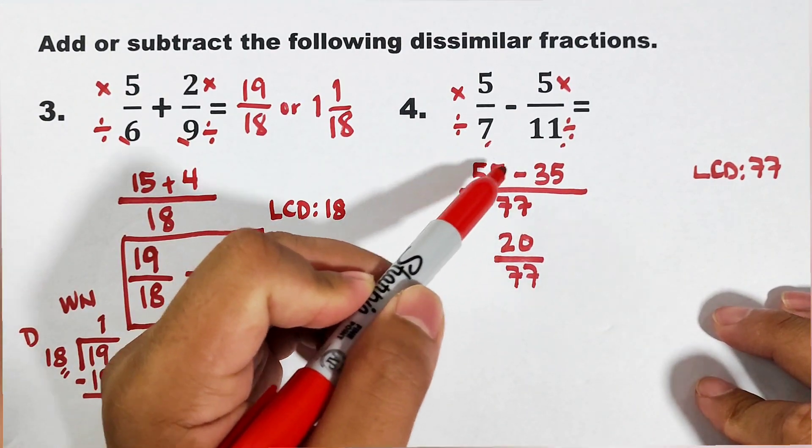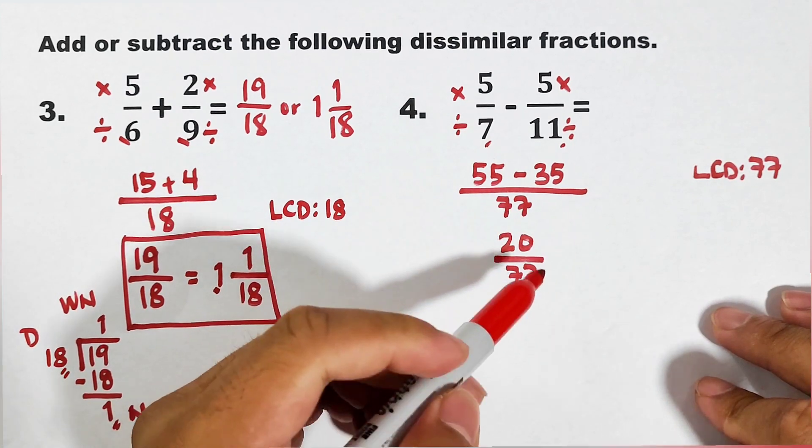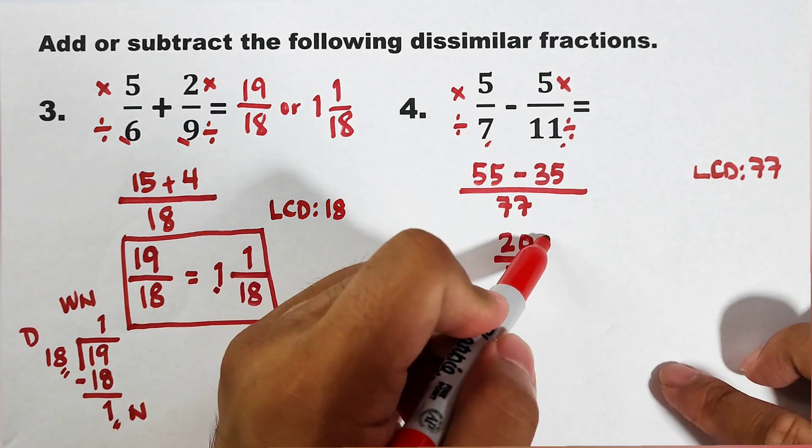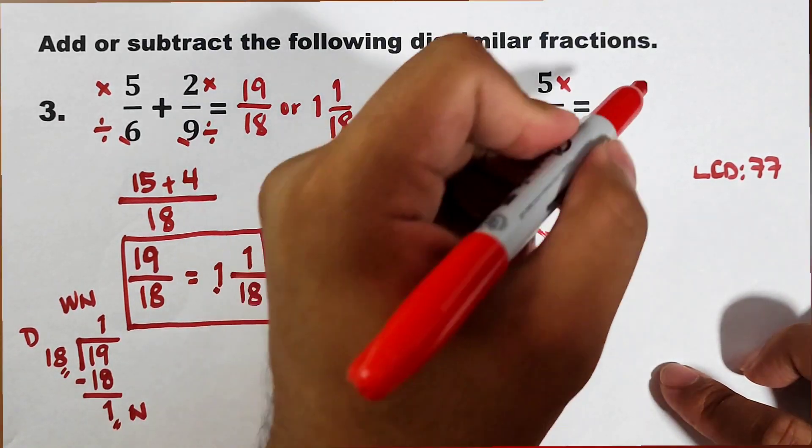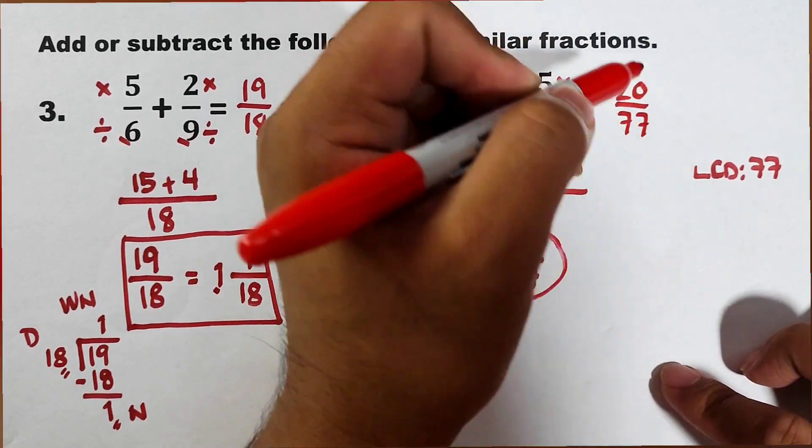So, what we have here is 55 minus 35, which is 20. Copy this denominator of 77. And as you can see, 20 and 77 are already in simplified form. So, this is our final answer, guys. 20 over 77.